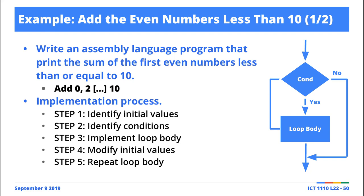We go through the same process: we identify the initial values we're going to work with, then we identify the conditions, and then we implement the loop body. Within the loop body we specify the conditions, and we have to continuously modify the initial values so that we eventually break out of the loop. We also need to repeat the loop, which is as simple as an unconditional branch back to the label — and a label is nothing more than an address in memory.